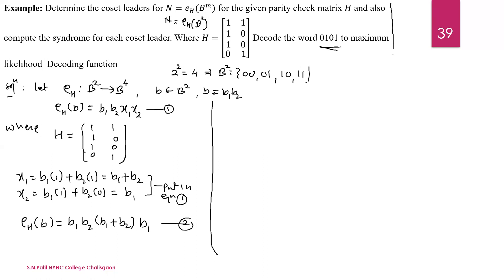Here we apply the process. The first step for finding the coset leader from the problem: we calculate N. In step 2, we prepare the table for syndrome — the table for syndrome and coset leader. In step 3, we have the received word. We say it as x_t, which is 0101.